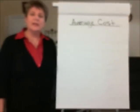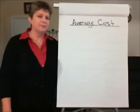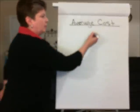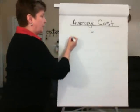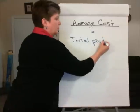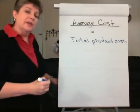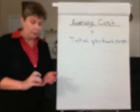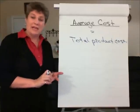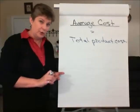Managerial accounting: calculation of average product cost. The calculation of average product cost is pretty straightforward. We simply take the total product cost — and remember that total product cost includes direct materials used, direct labor, and manufacturing overhead, the indirect factory costs incurred in making a product.